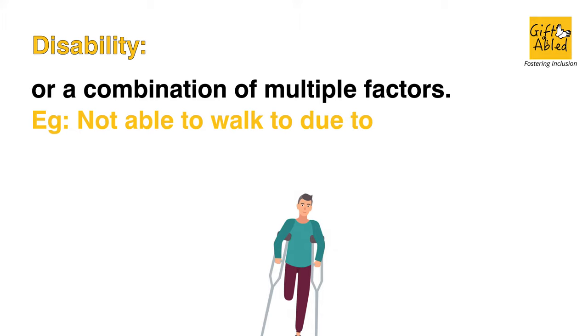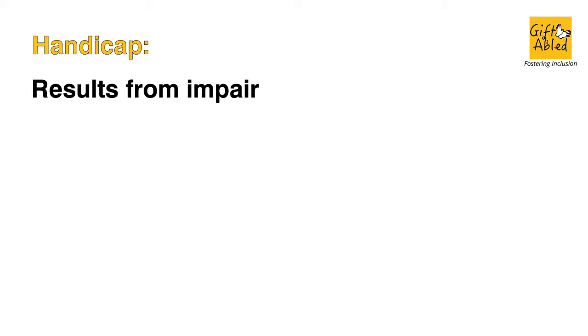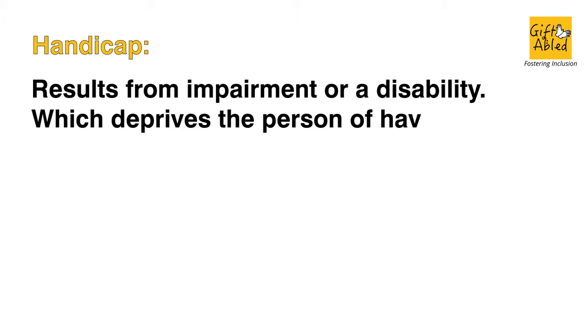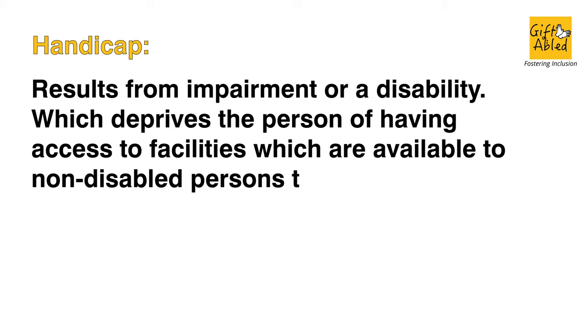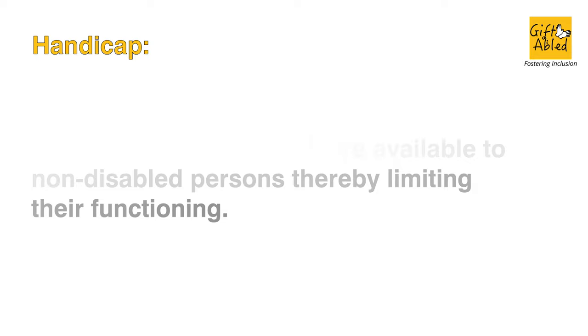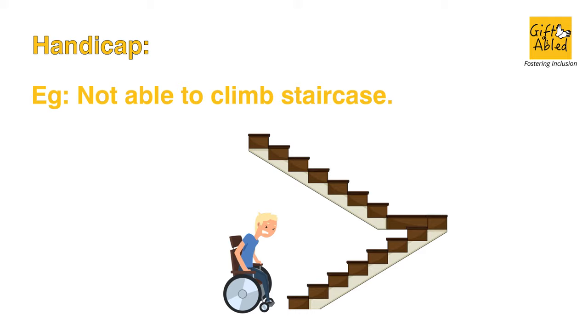Example: not able to walk due to loss of limb. Handicap results from impairment or a disability which deprives the person of having access to facilities which are available to non-disabled persons, thereby limiting their functioning. Example: not able to climb a staircase.